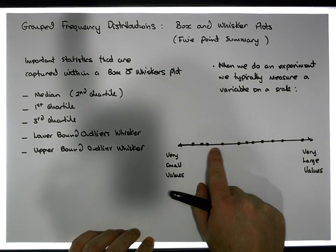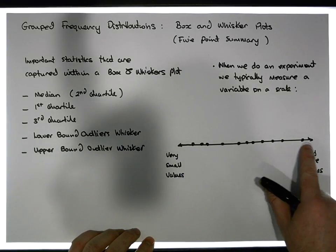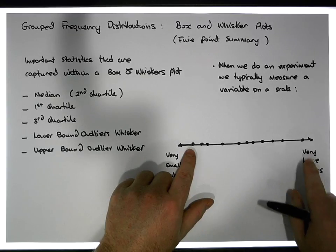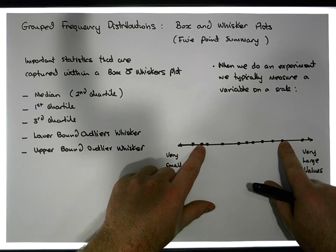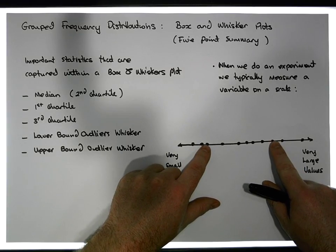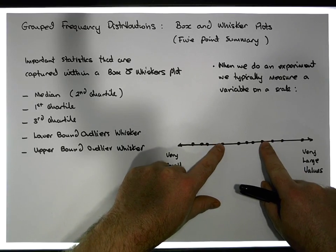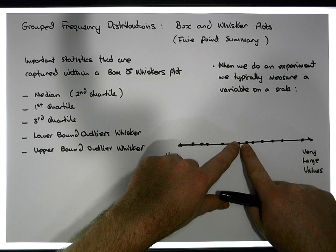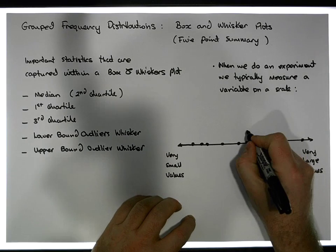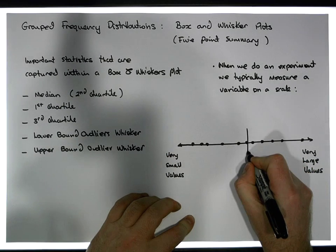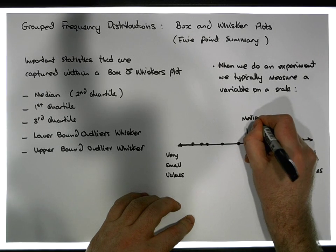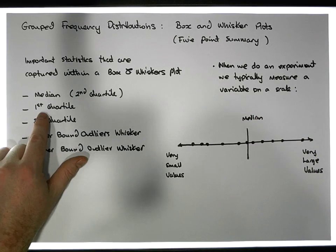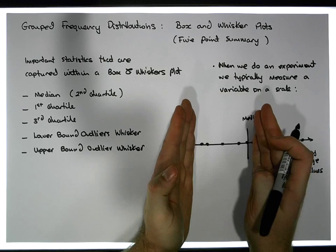Let's see how many observations we have: one, two, three, four, five, six, seven, eight, nine, ten, eleven — we have eleven observations. Crossing off pairs from each end, we end up with a point in the middle. That particular observation is the median value.